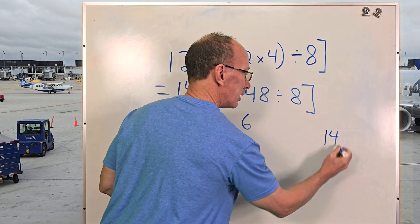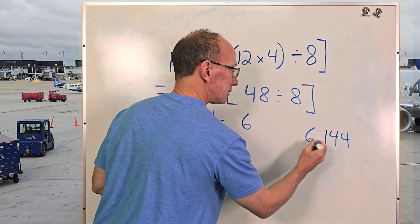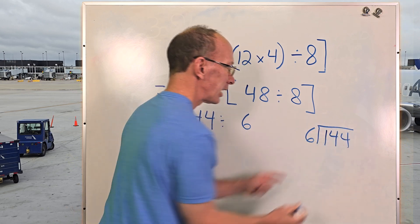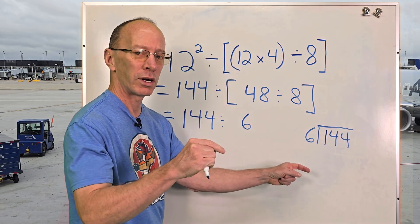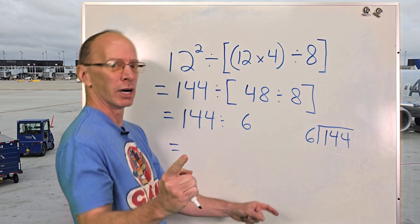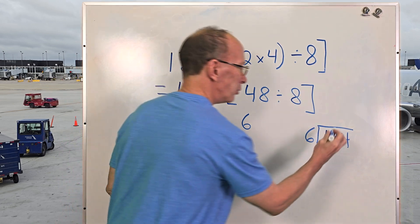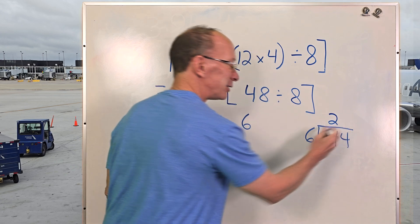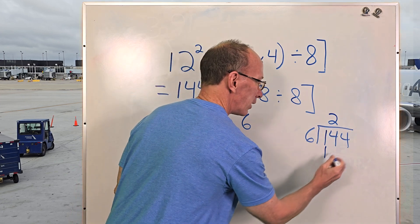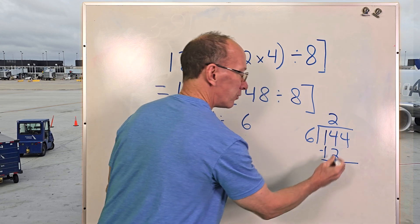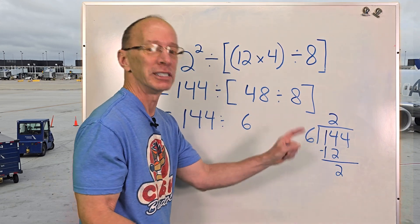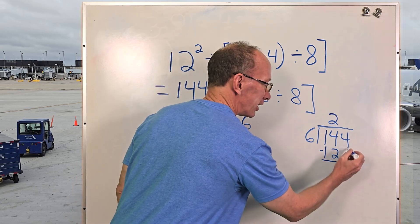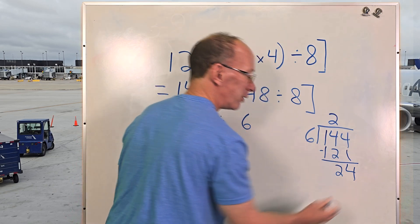I'm going to write 144 here and then 6. How many times does 6 go into 14? 6 times 2 is 12. 6 times 3 is 18—too high. We're going to keep it at 2. So I'm going to put 2 right there. 2 times 6 is 12. Then subtract. So 4 minus 2 is 2. Then you bring that next number down. Boom, 24.